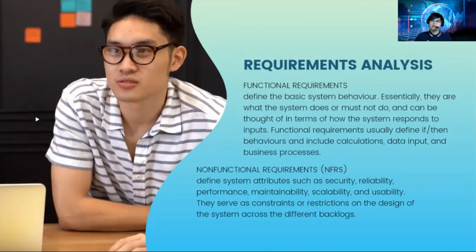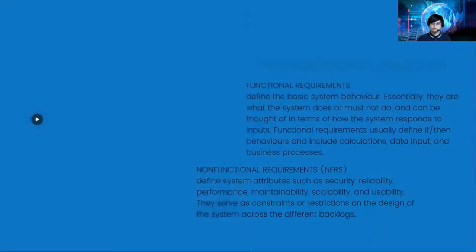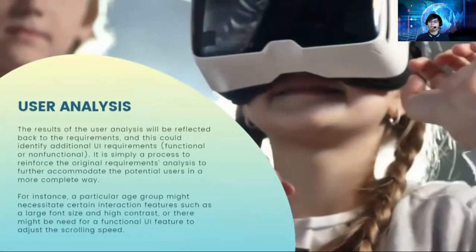To summarize: functional requirements are the main features of your system, while non-functional requirements are the attributes — such as security, reliability, performance, maintainability, and usability. It is very important to understand both the functional and non-functional requirements.